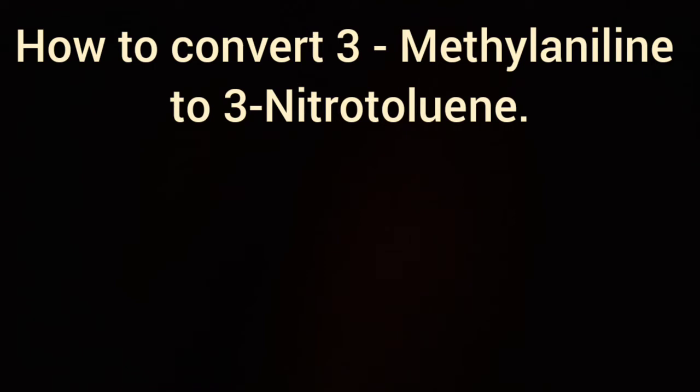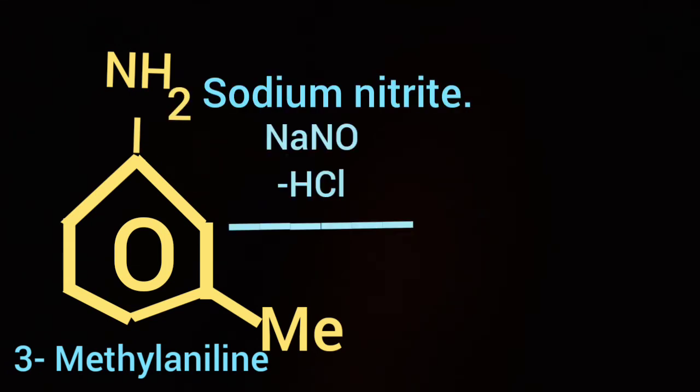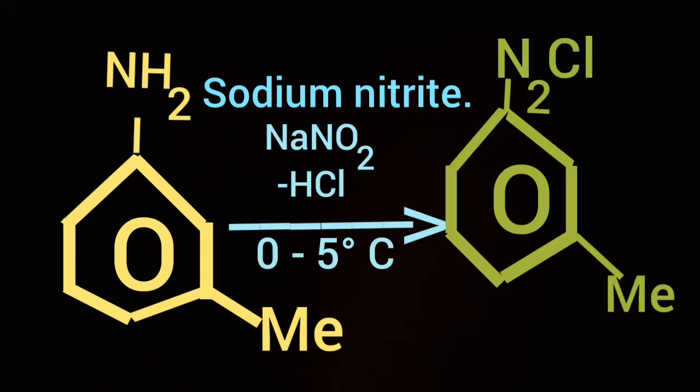Let us take 3-methylaniline as shown on the screen. This compound is treated with sodium nitrite and cold dilute HCl at 0 to 5 degree centigrade, which gives the corresponding diazonium chloride.